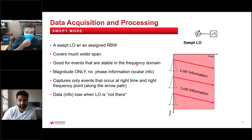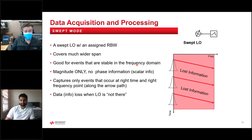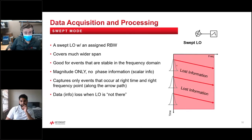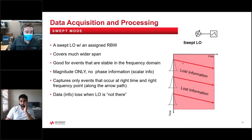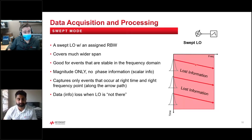If you're using a swept tuned analyzer in typical swept mode, the resolution bandwidth filter is only capturing information in that filter as it sweeps across frequency. If you had an intermittent signal that pops up at a particular frequency, by the time the filter gets there, the signal is gone — that information doesn't get captured. That's one of the key drawbacks of the swept tune mode: it doesn't always capture intermittent signals, and there's lost information not captured between sweeps.